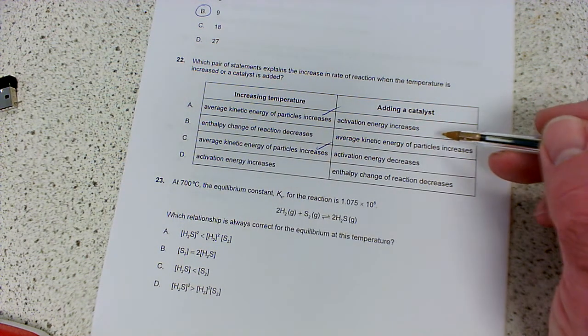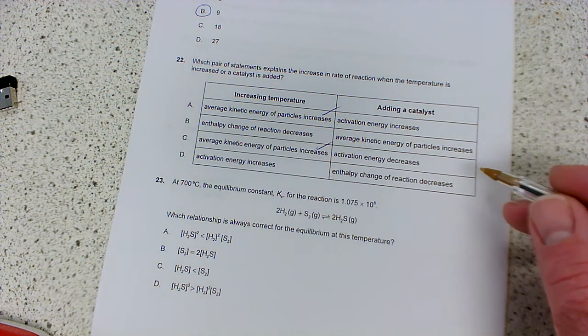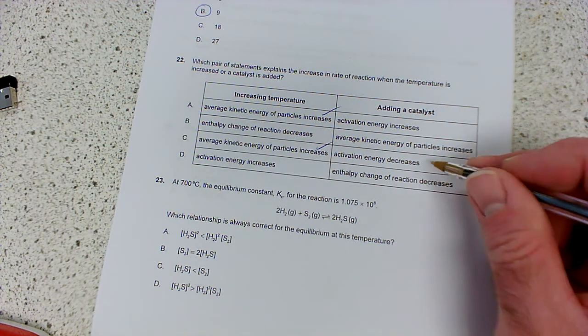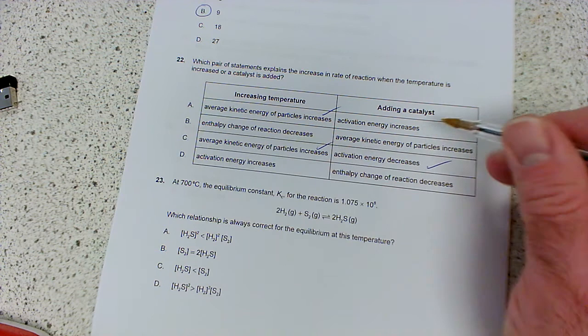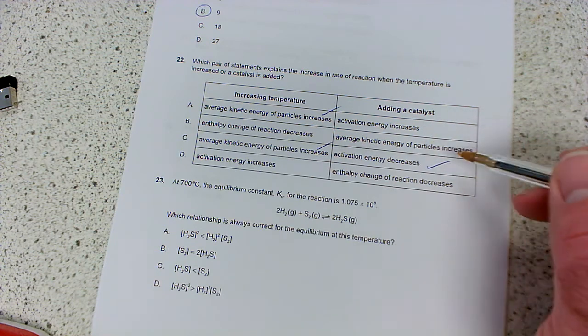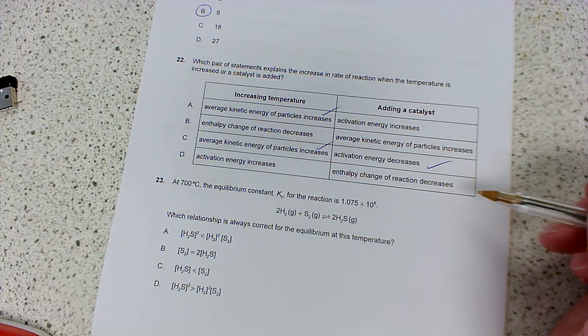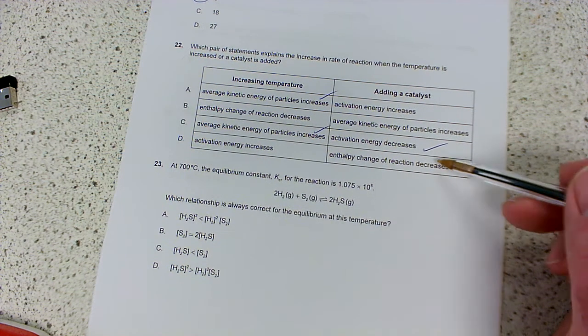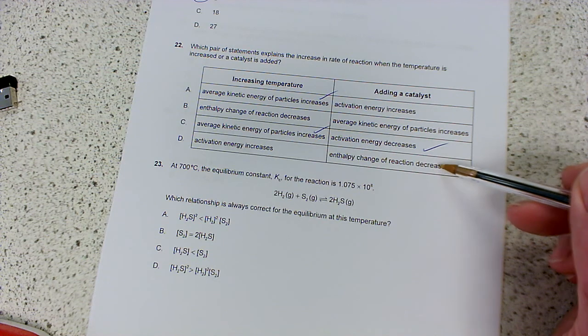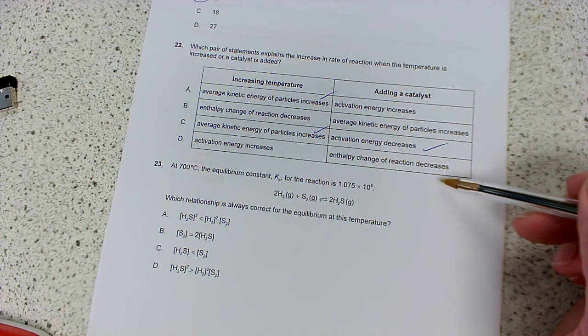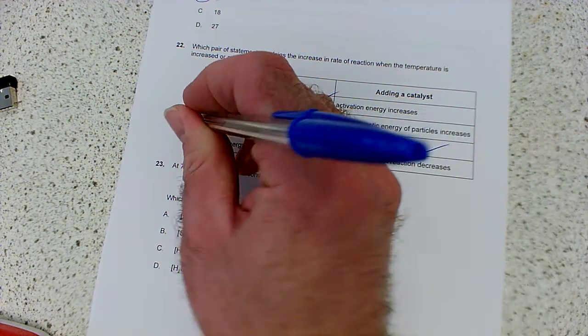Adding a catalyst, well that's going to decrease the activation energy. So that's going to be this one here. It certainly won't increase the activation energy. It won't affect the average energy because that's the temperature, basically is a measure of the average kinetic energy. And once again, it wouldn't actually affect the enthalpy change delta H itself, just the distance to the top of the hill. So C is the right answer.